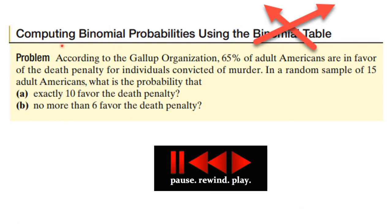Here's another problem. According to a Gallup poll, 65% of adult Americans favor the death penalty for individuals convicted of murder. In a random sample of 15 adult Americans, Part A asks: what's the probability that exactly 10 favor the death penalty? Part B asks: what's the probability that no more than 6 favor the death penalty? You know what to do — let's see how you did.